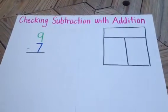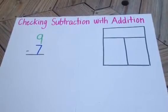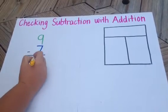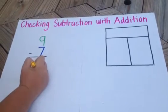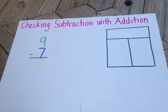We are going to be checking subtraction with addition. Our problem today is 9 minus 7. We believe the answer is 2.